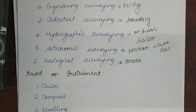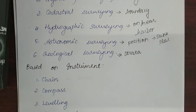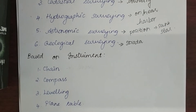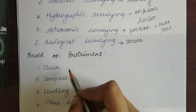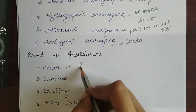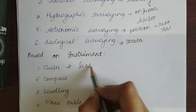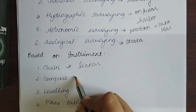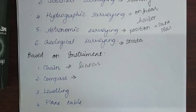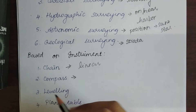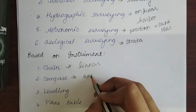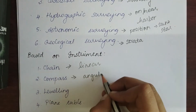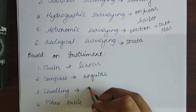Based on instruments, surveying can be divided into several types. Chain surveying is used to find the linear distance between two objects. Next is compass surveying, which is used to find angular measurements.